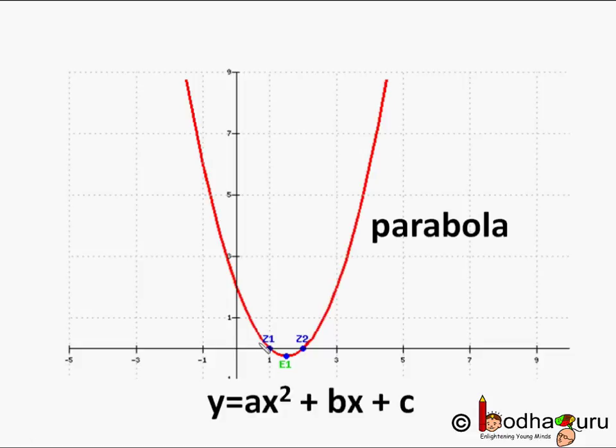In fact, the graph of any quadratic polynomial ax² + bx + c where a is not 0 would give this kind of graph. This shape is called parabola.